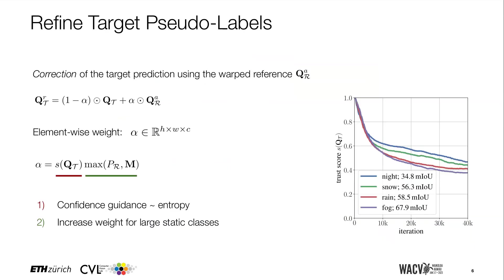Moving on to the second step, the refinement: here we aim to correct the target predictions using the warped reference predictions qr. This refinement is simply a convex combination with element-wise weights alpha. The weights are influenced by two factors: first, the weight is inversely proportional to the confidence of the target predictions, which tends to increase as training progresses; and second, the weight is increased if the pixel is assumed to belong to a large static class, which is an empirical choice.